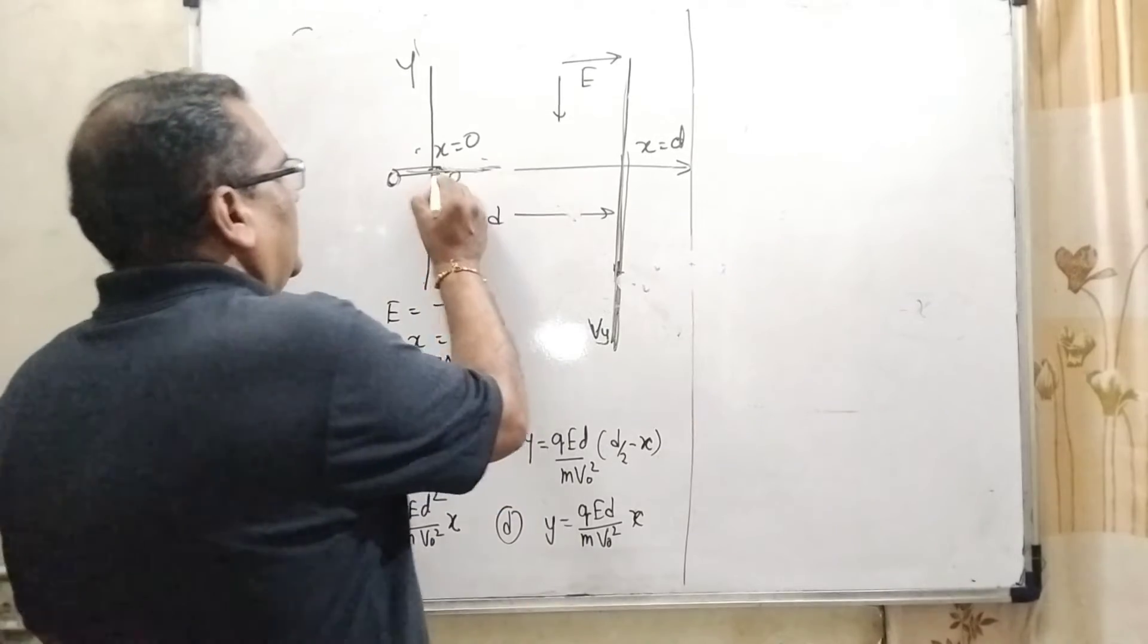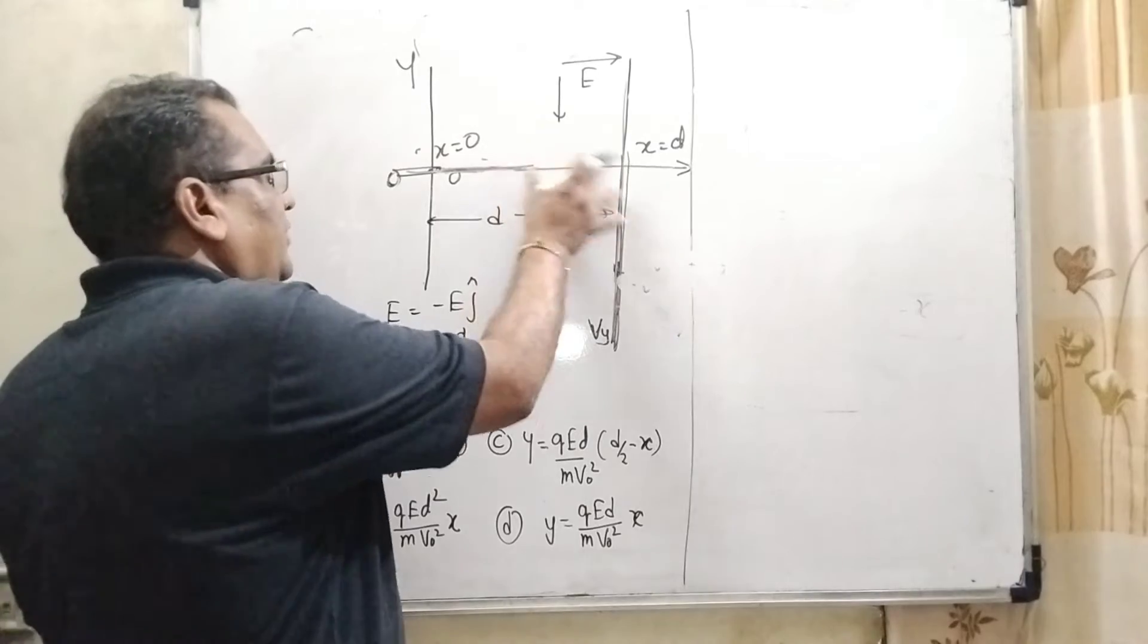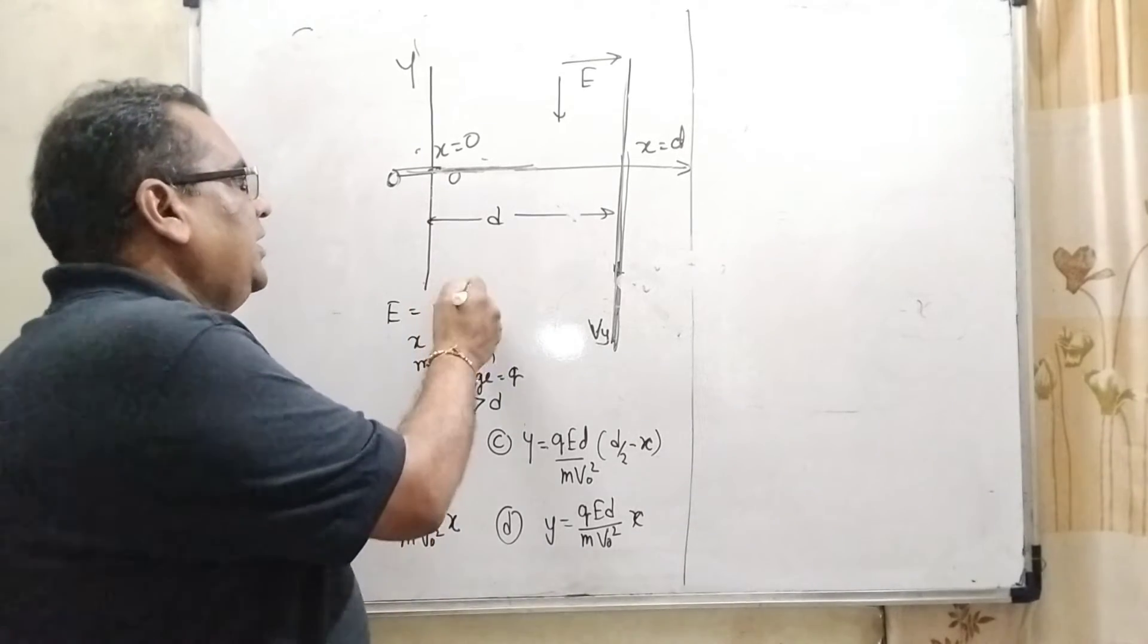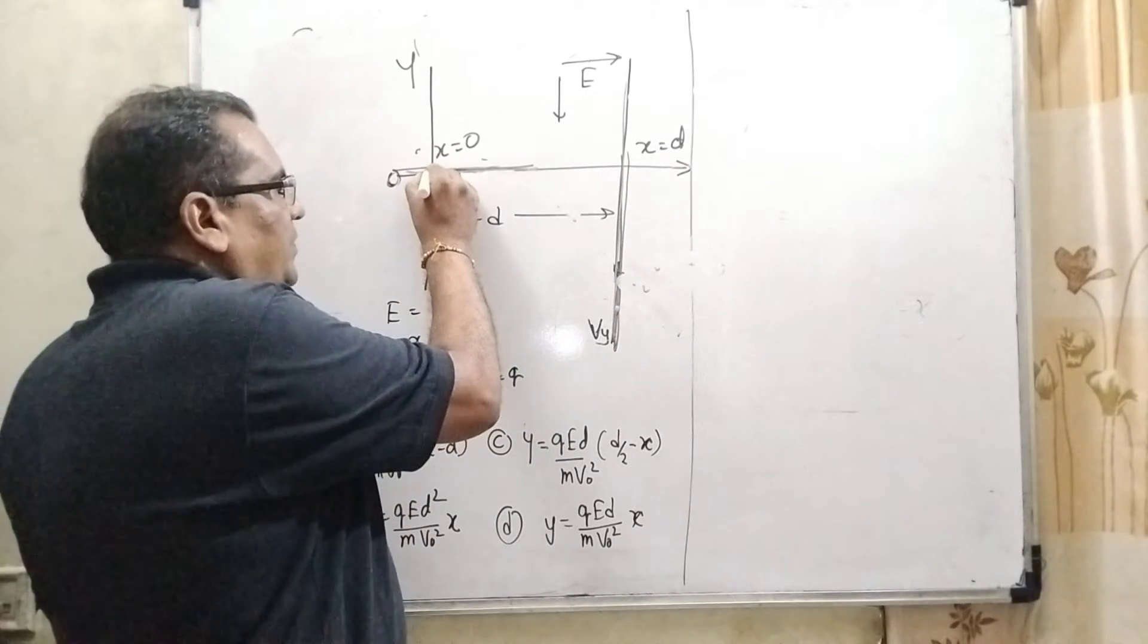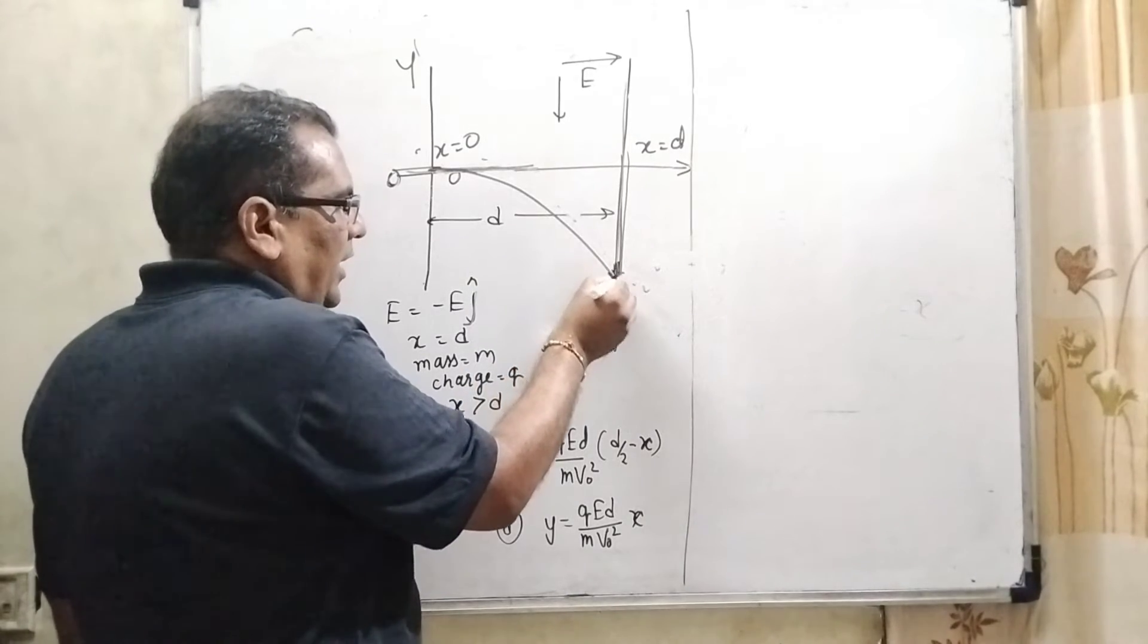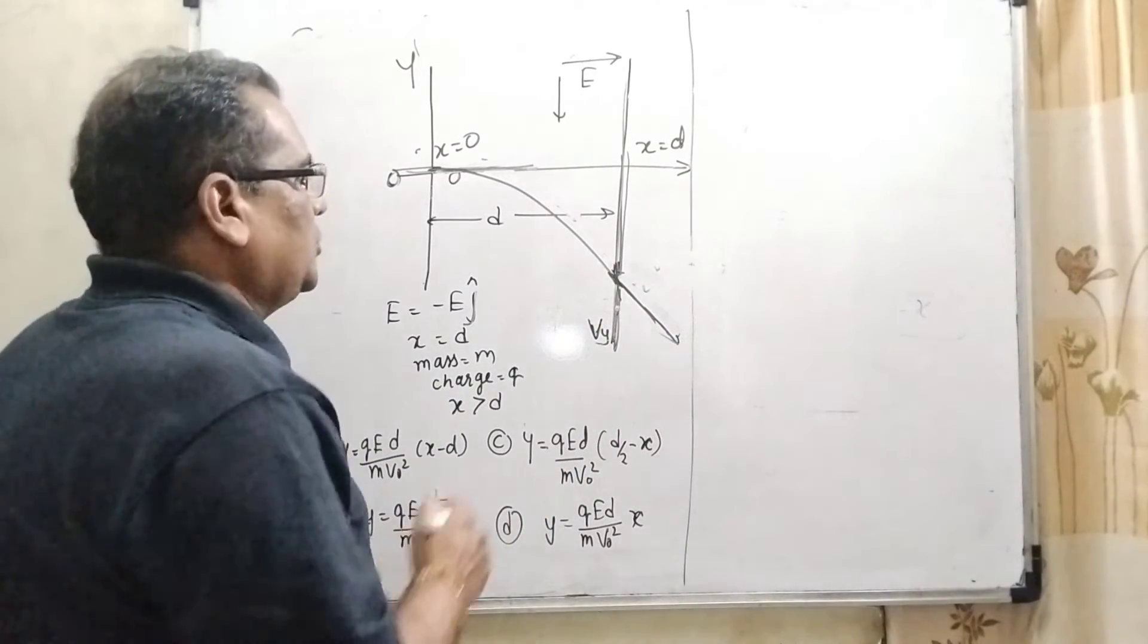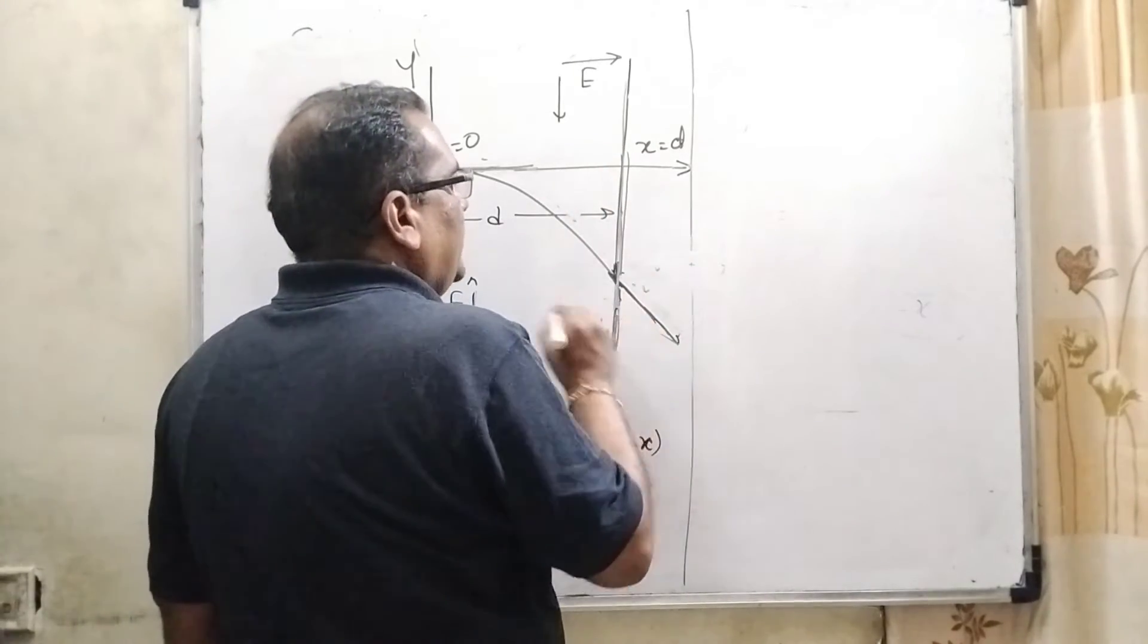In this question, a charged particle which has mass m and charge q is moving in this electric field between x equal to 0 to x equal to d. And the direction of E is equal to minus E j. What does it mean? E j means y direction, negative. So therefore, the charged particle deviates and moves towards the negative direction and exits in this direction. And we have to find out this y using all these components of velocity.